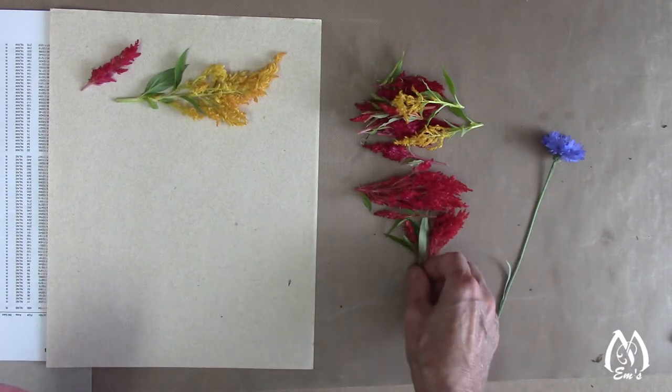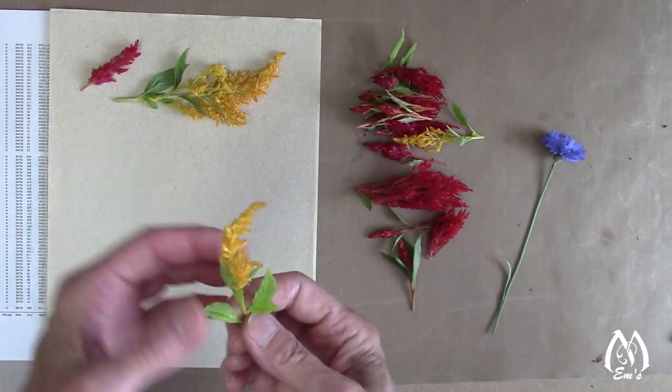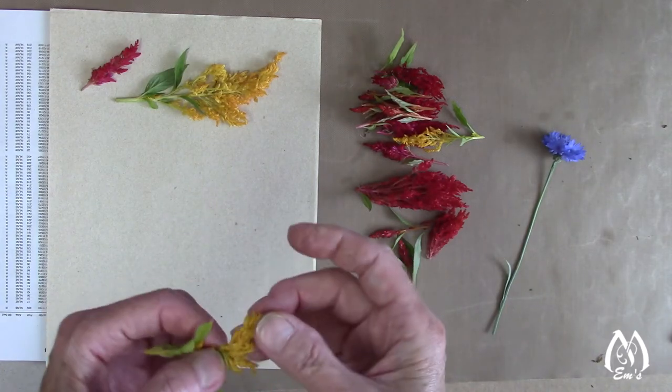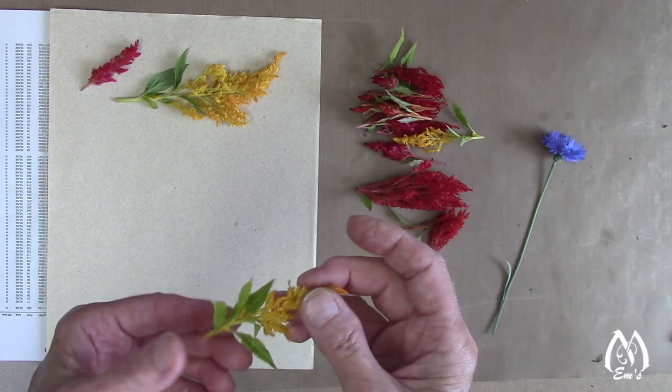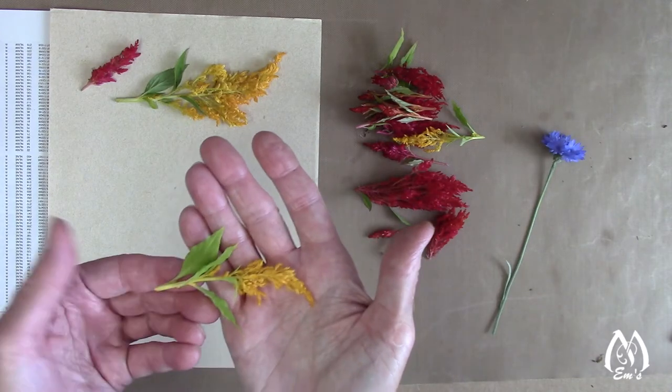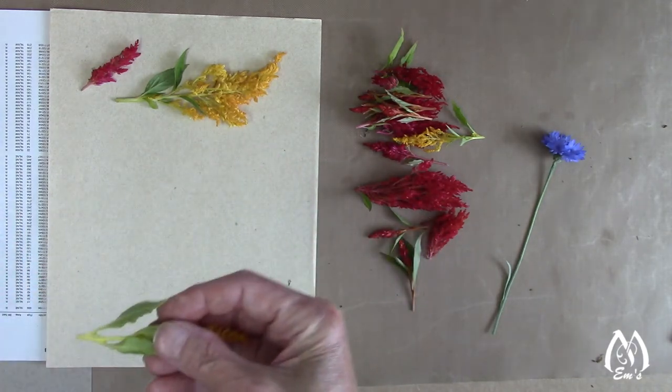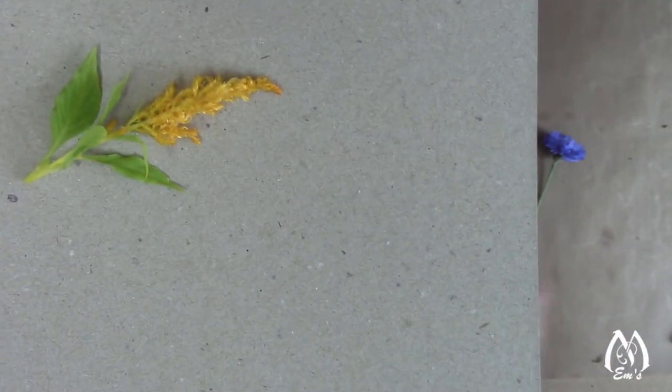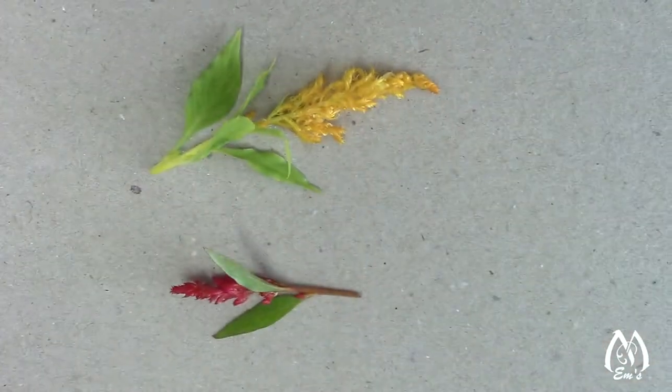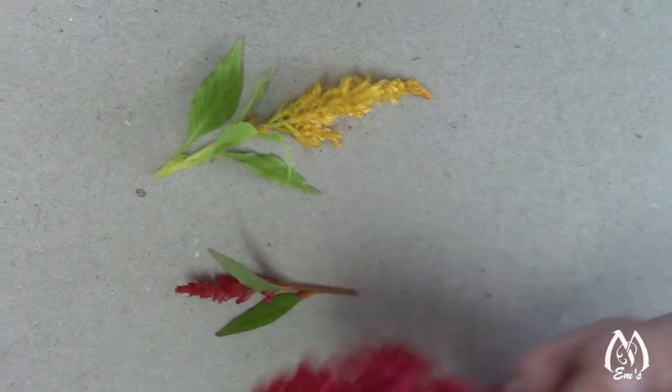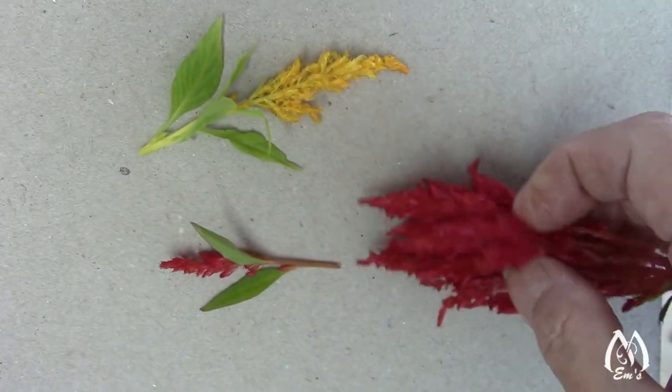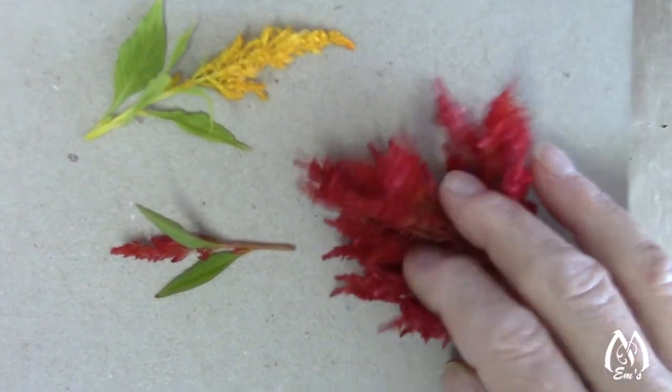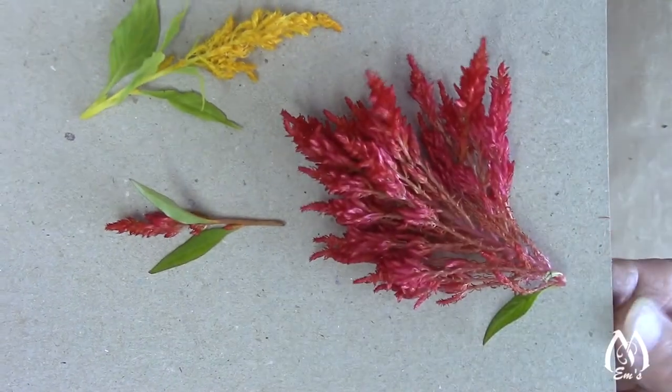So this is Celosia. And because most of the work that I do is small, cards, tags, jewelry, bookmarks, things like that, I really like them when they're smaller, the smaller plumes. And so consequently what happens on these larger plumes is I will fan them out so that then I can extract the smaller plumes when I'm working.